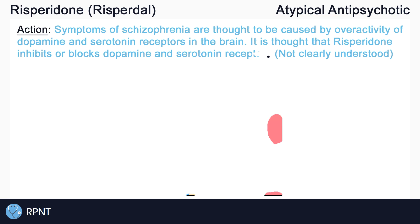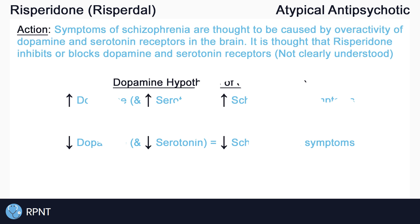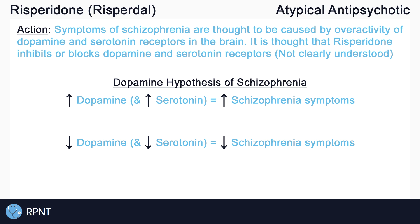These symptoms of schizophrenia and other mood disorders are thought to be caused by overactivity of different neurotransmitters in the brain, especially dopamine and serotonin. It is thought that Risperidone inhibits dopamine and serotonin receptors, thereby reducing the symptoms of schizophrenia. Keep in mind that schizophrenia and Risperidone are still not completely understood.